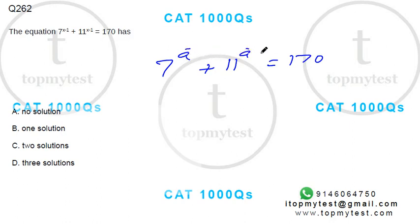So these two are out. Let's see if we can get a solution. If I put 1 as a, you'll get 7 plus 11, not equals this.